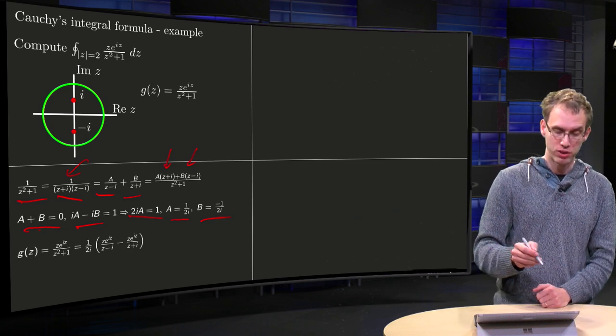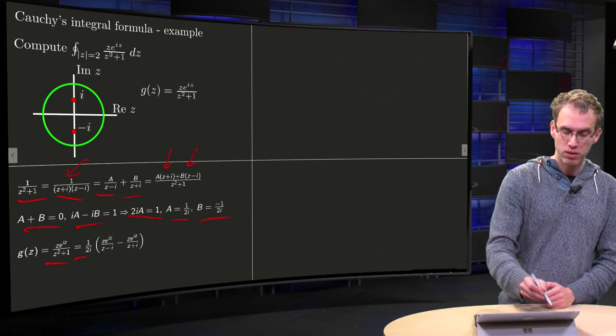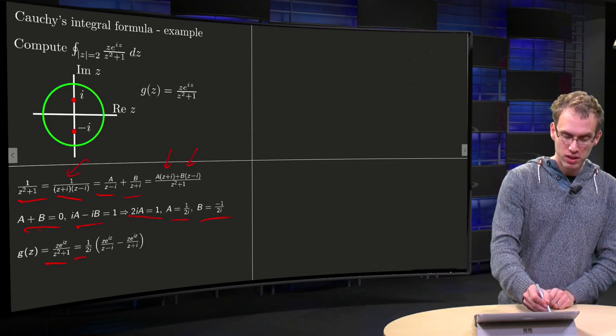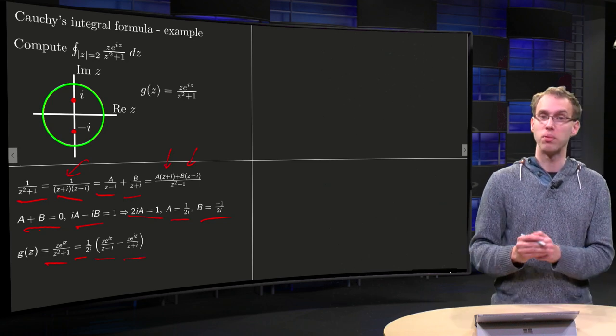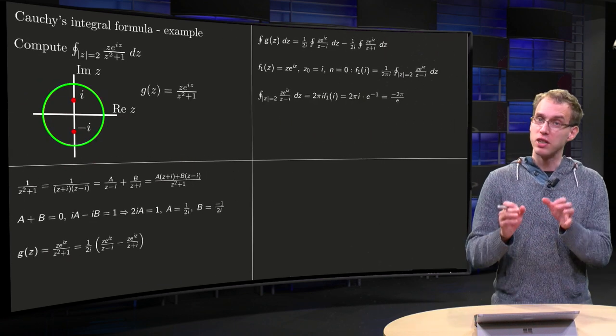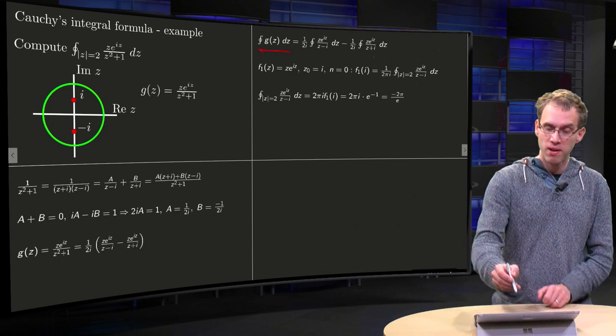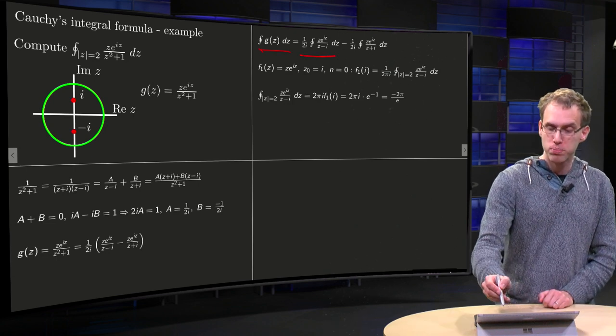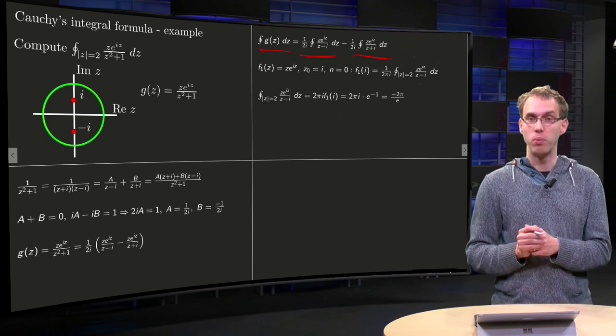So you can rewrite your function g(z) as a sum. Take the 1 over 2i in front: z·e^(iz) over (z - i) minus z·e^(iz) over (z + i). And now we can split our integral of g into two parts: integral of the first part with only one singularity, integral of the second part with also only one singularity.